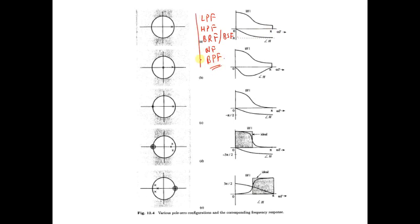We have seen how the placement of poles and zeros affects the filter response, and how it can be useful in determining the frequency response of a given system. Another important thing is the effect of positioning of the poles — specifically radial positioning.